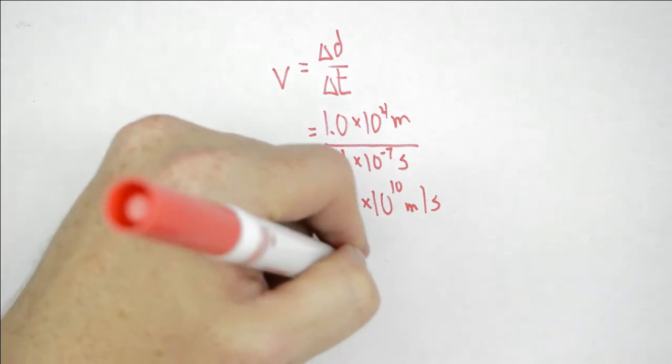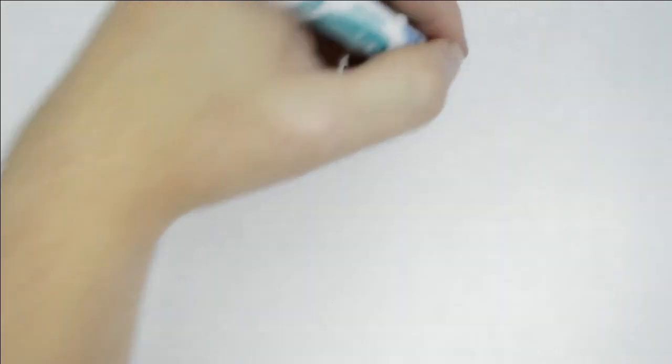So there must be something else going on. And that something else is that for every bit of time dilation, we have an equal amount of length contraction.